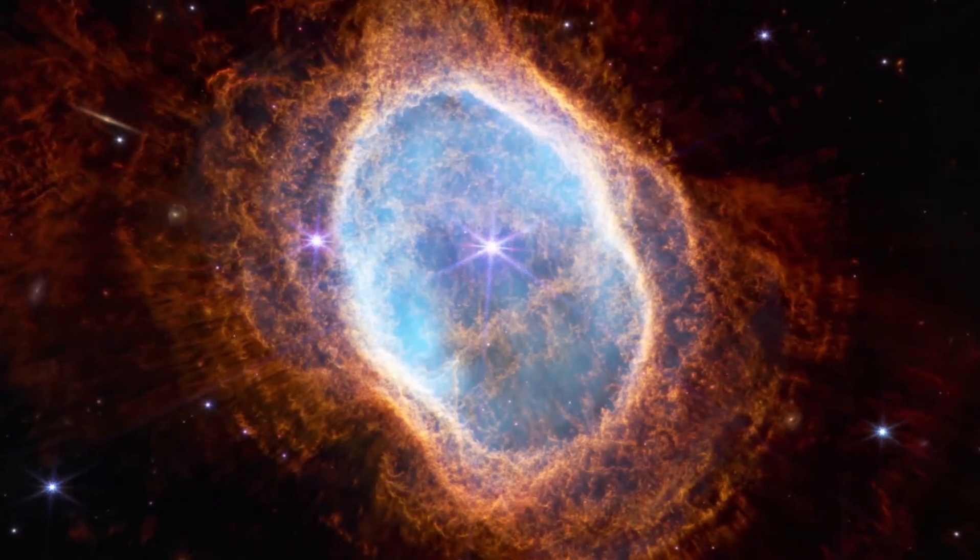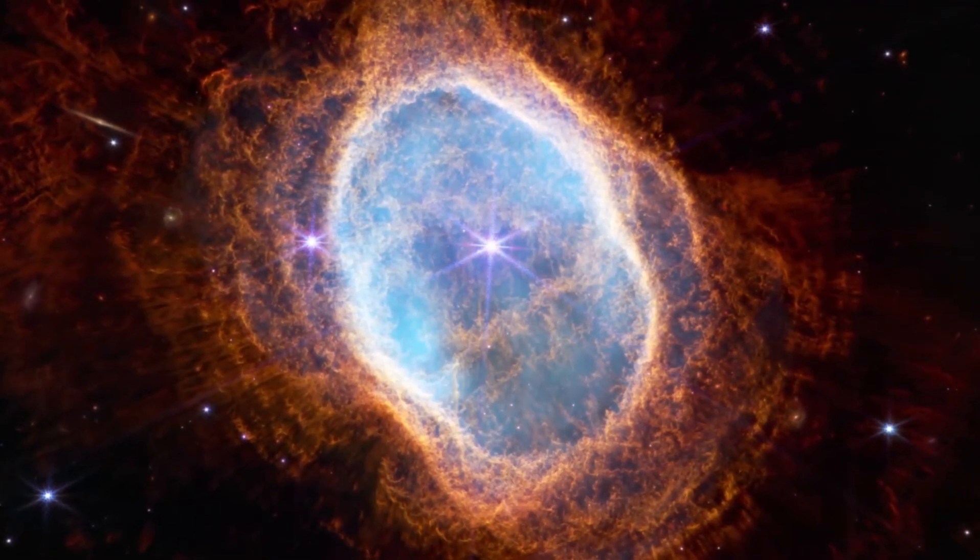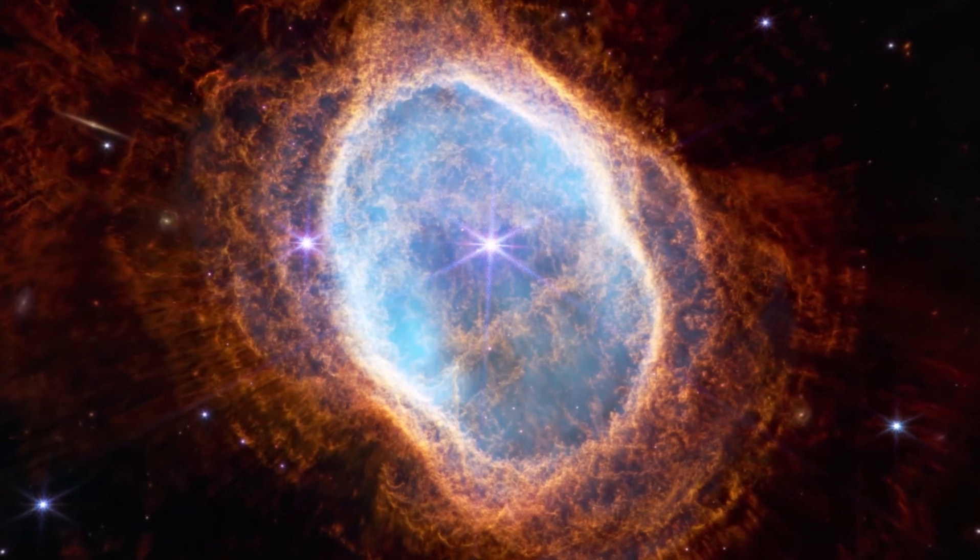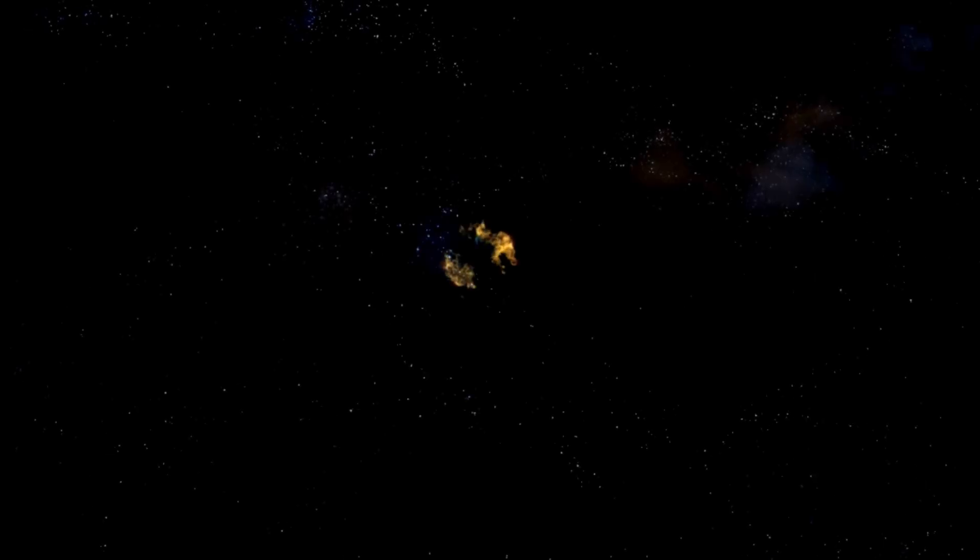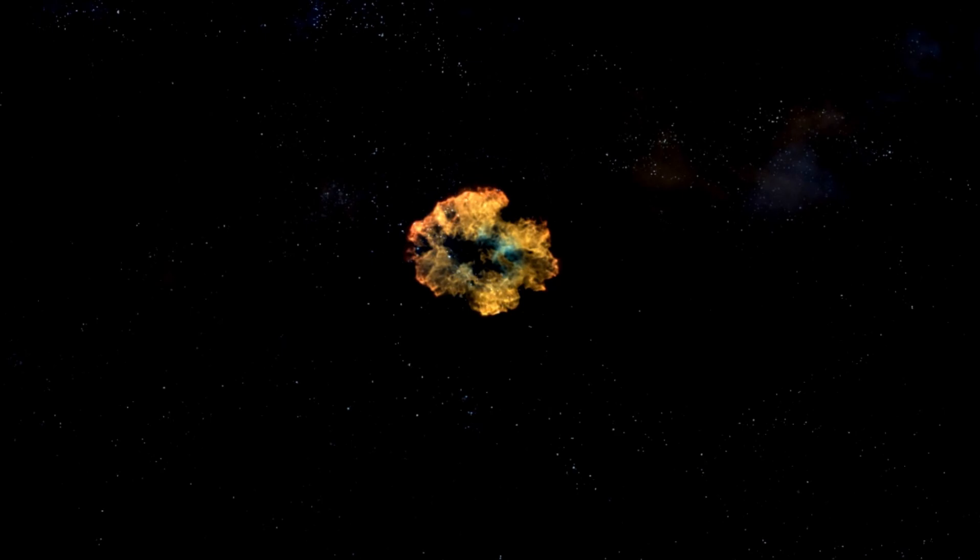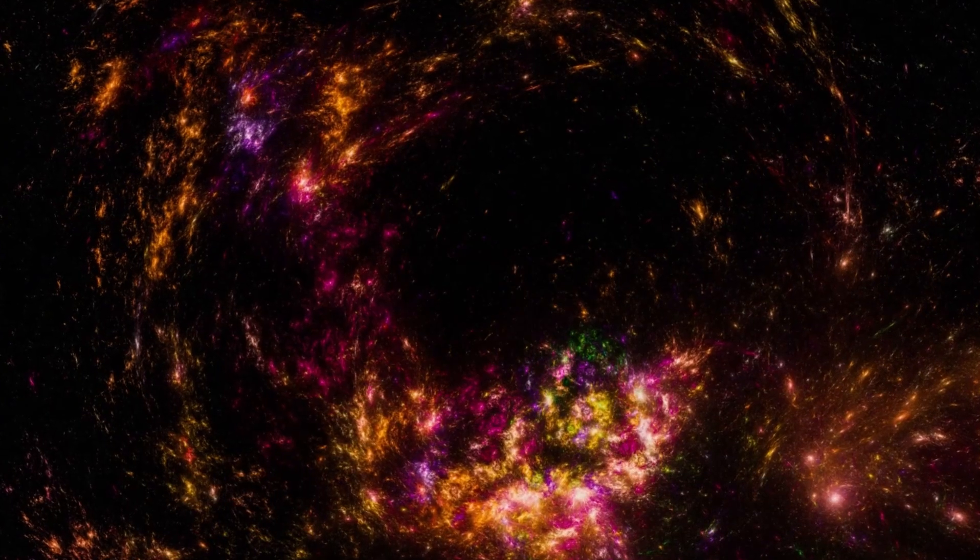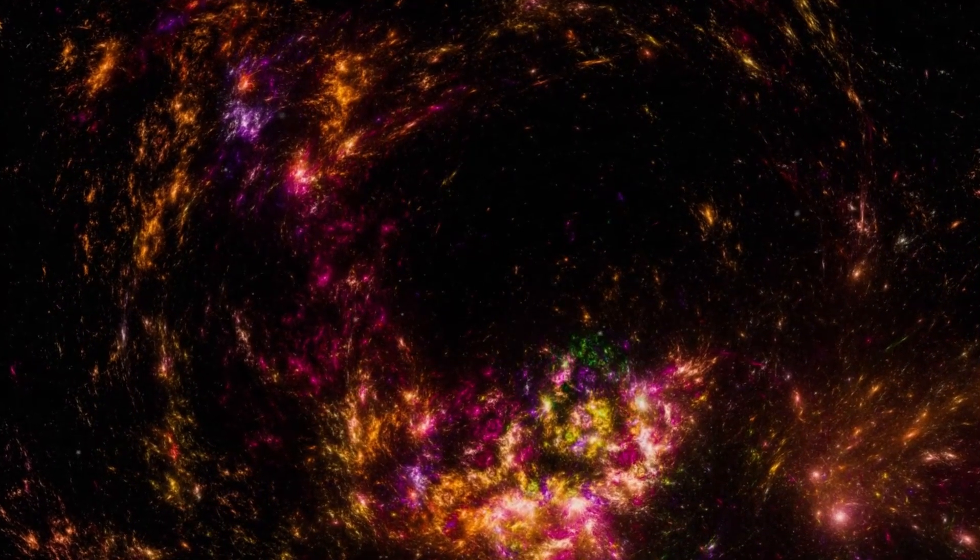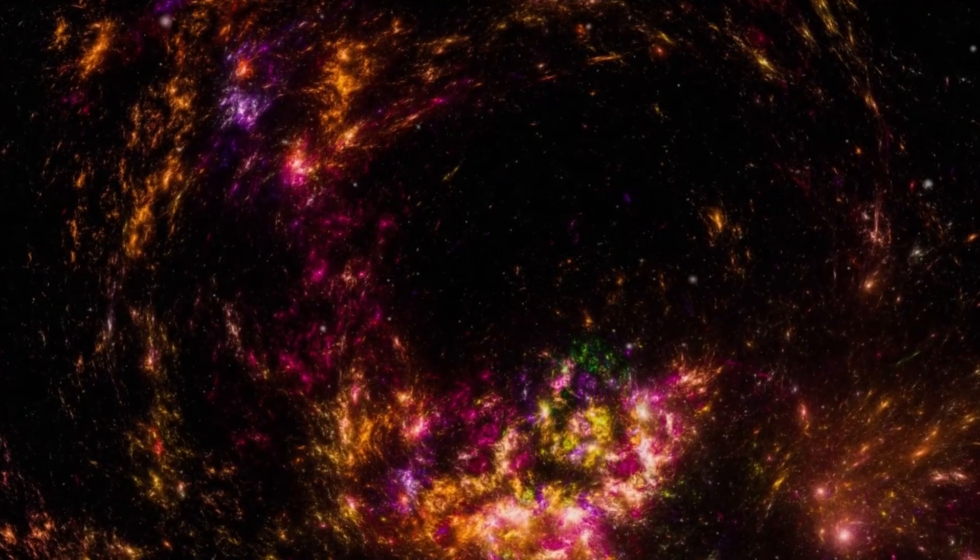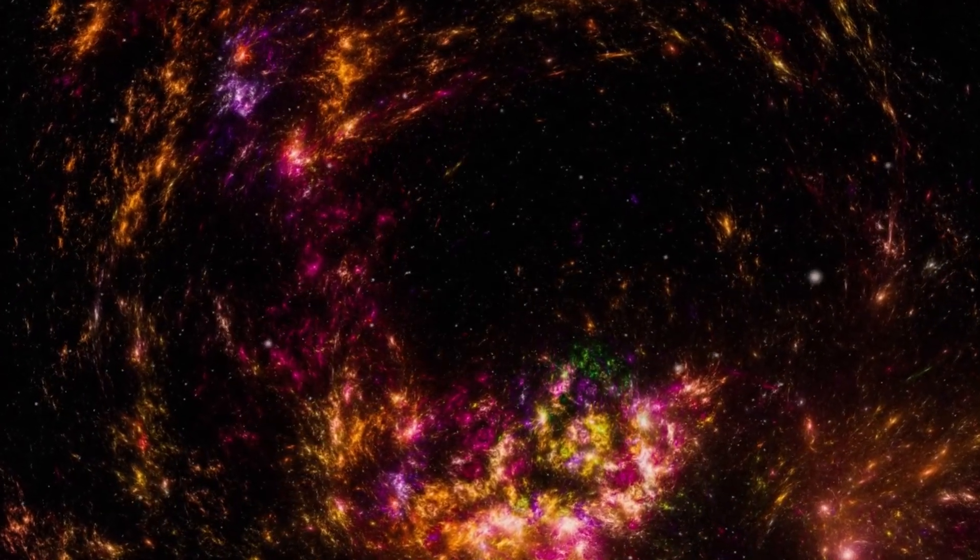Betelgeuse, a red supergiant in the constellation Orion, has long captivated cosmologists and stargazers alike with its immense size and brilliance. This massive star, located approximately 642 light-years from Earth, is one of the brightest celestial objects visible to the naked eye.